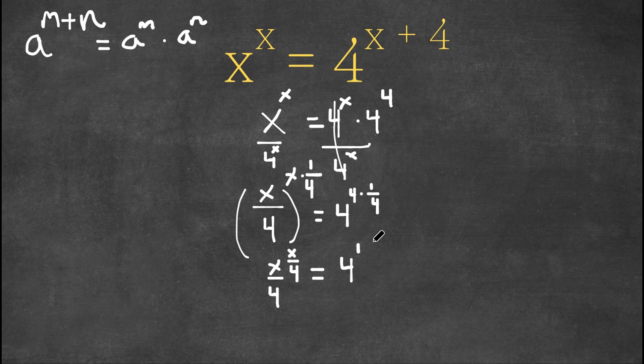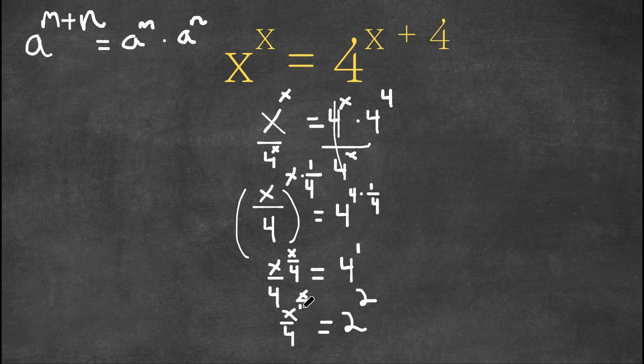Now 4 to the power of 1 can also be written as 2 to the power of 2. So we have x over 4 to the power of x over 4 equals 2 squared.